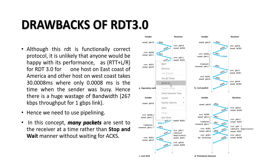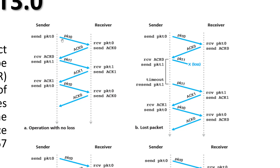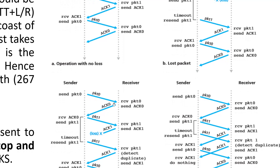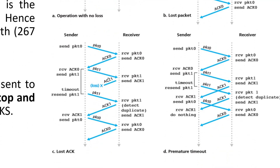In RDT 3.0, packet 0 must be sent and its acknowledgement received before packet 1 is sent. In a more real scenario, if any packet is lost, it has to wait for the timeout to end before the next packet is sent. If an acknowledgement is lost, there will be duplicate packets at the receiving end, and if the acknowledgement is delayed, it creates further complications.